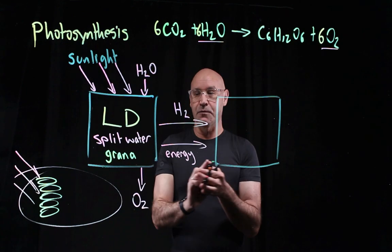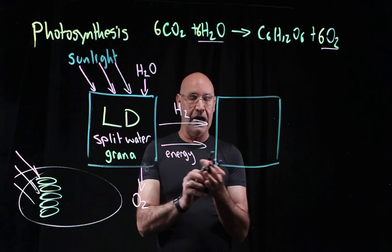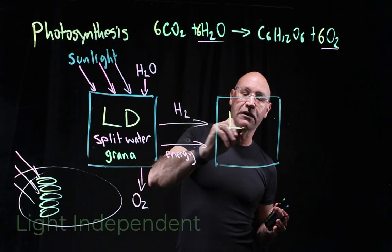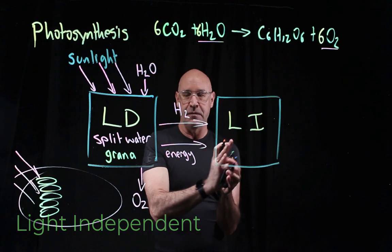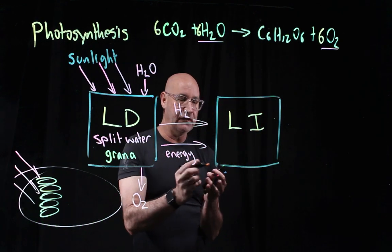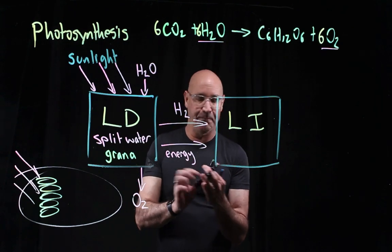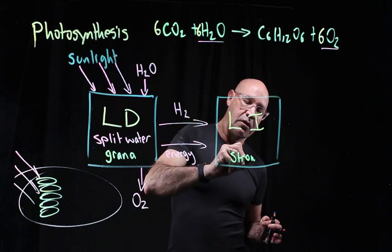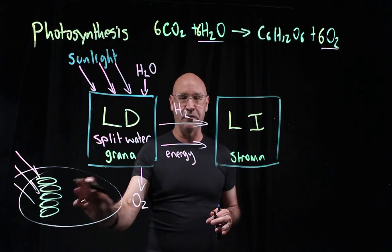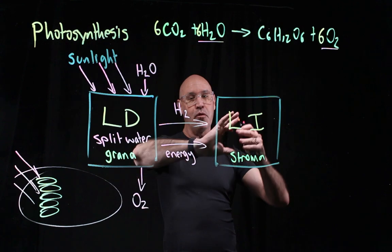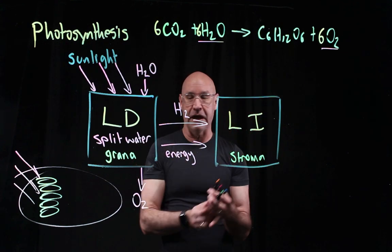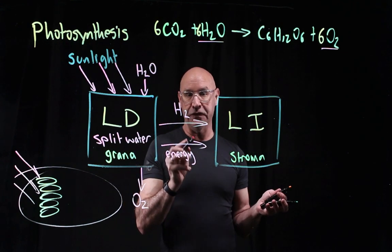Now we're in the second half of the reaction, and these are called our light independent reactions. Light independent. This occurs in the stroma. The stroma is this space here between the grana. The whole point of the light independent reactions is to fix carbon.